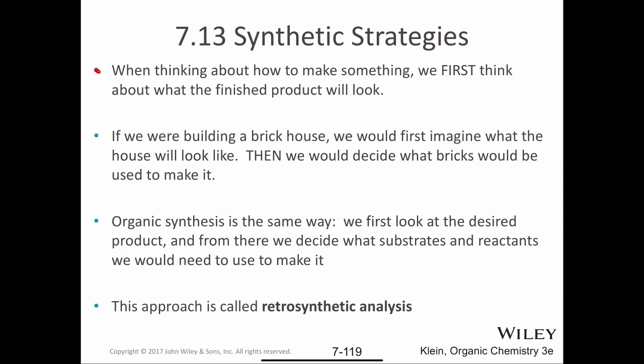A little more about thinking through how you would make molecules: when we think about how to make something, we first think about what the finished product looks like. The analogy is a brick house — first you imagine what it looks like, then decide what materials to use. In organic synthesis, we look at the desired product and decide what substrates and reactants to use. We call this approach retrosynthetic analysis, and the arrow we use is a double-line arrow — the retrosynthesis arrow.